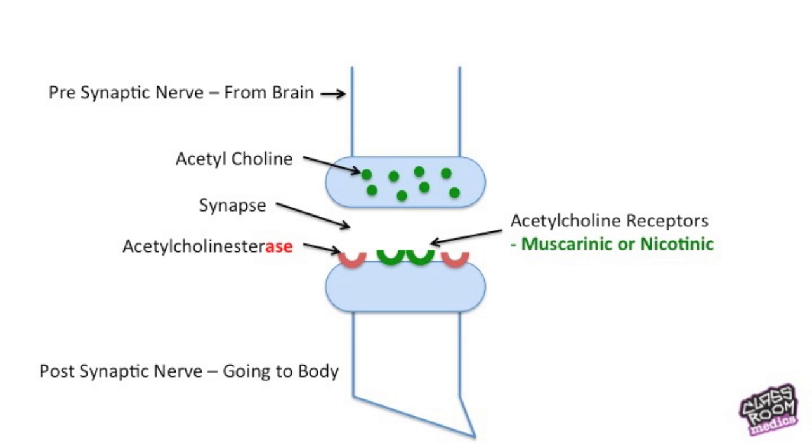So the first slide you can see, what we've got here is two nerves, so it's a synapse. You've got the presynaptic nerve from the brain, inside that you've got acetylcholine which is a neurotransmitter, you've got the gap in between which is a synapse, you've got the postsynaptic nerve so the nerve connecting to the other one, and then on that nerve you've got acetylcholine esterase which is an enzyme that breaks down acetylcholine, and then you've got acetylcholine receptors that pick up the acetylcholine. These can be called muscarinic or nicotinic.